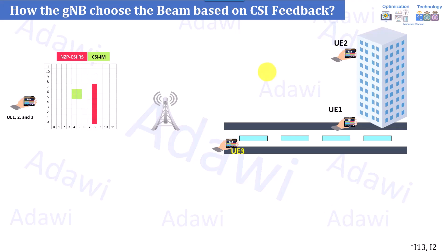Let me explain with a clear example of how the user measures the CSI-RS and reports the PMI information, and how the gNB will allocate the traffic channels. Assume you have three users — user one, two, and three — or the same user in different locations or moving. User one is located here, user two is on the same vertical plane but at a different horizontal position, and user three is staying in a high-rise building.